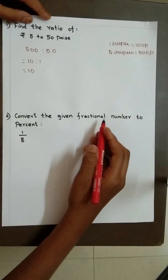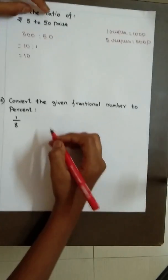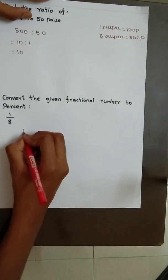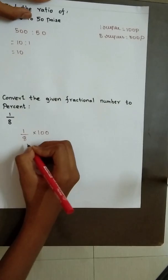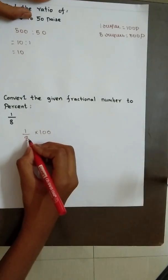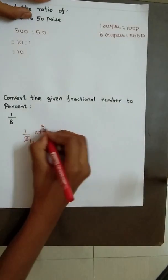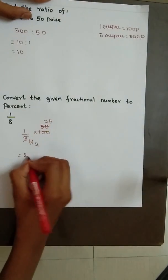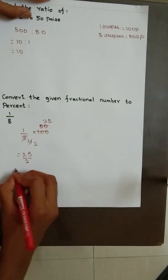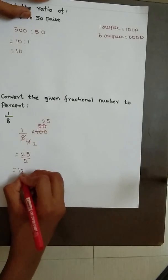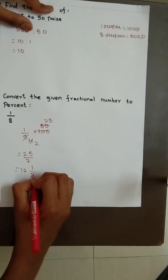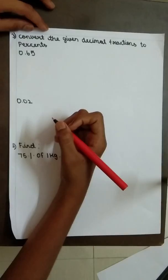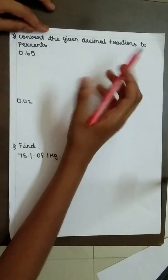Question number 2. Convert a given fractional number to percent: 1 by 8. We know that percent means into 100. So 1 by 8 into 100. Now we should cancel this by 2 table, 4 times 50 to 25. 25 by 2. If we change it into mixed fraction, the answer is 12 and 1 by 2. In decimal number, 12.5%.